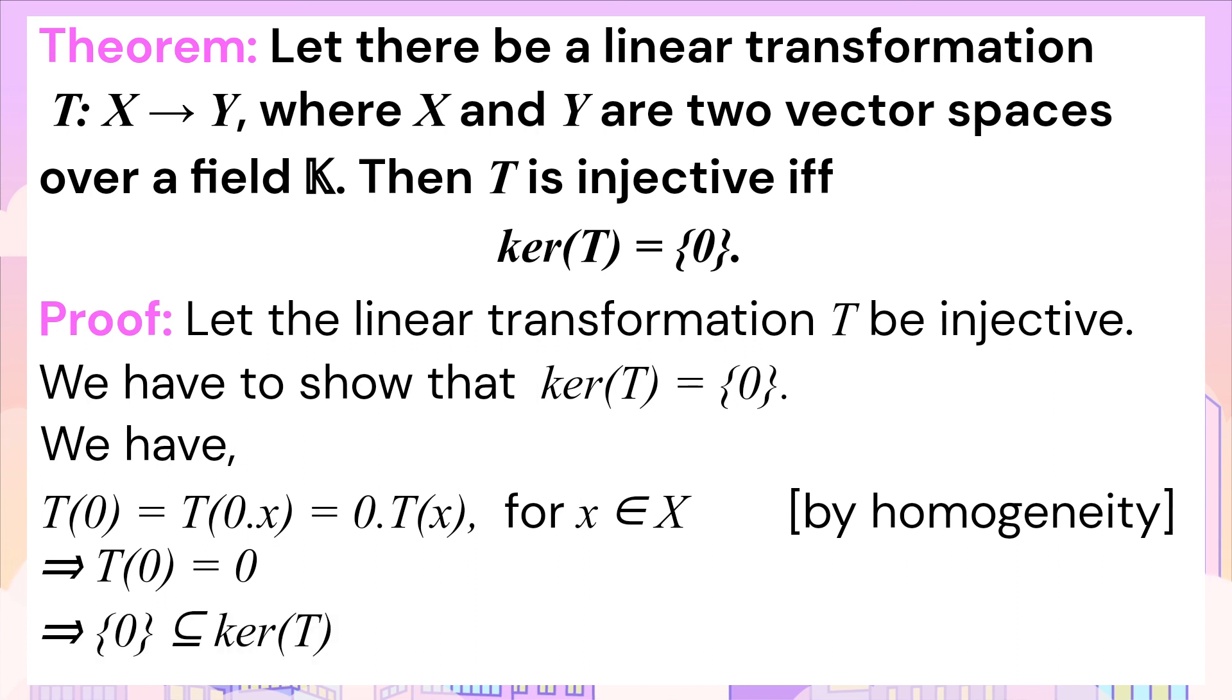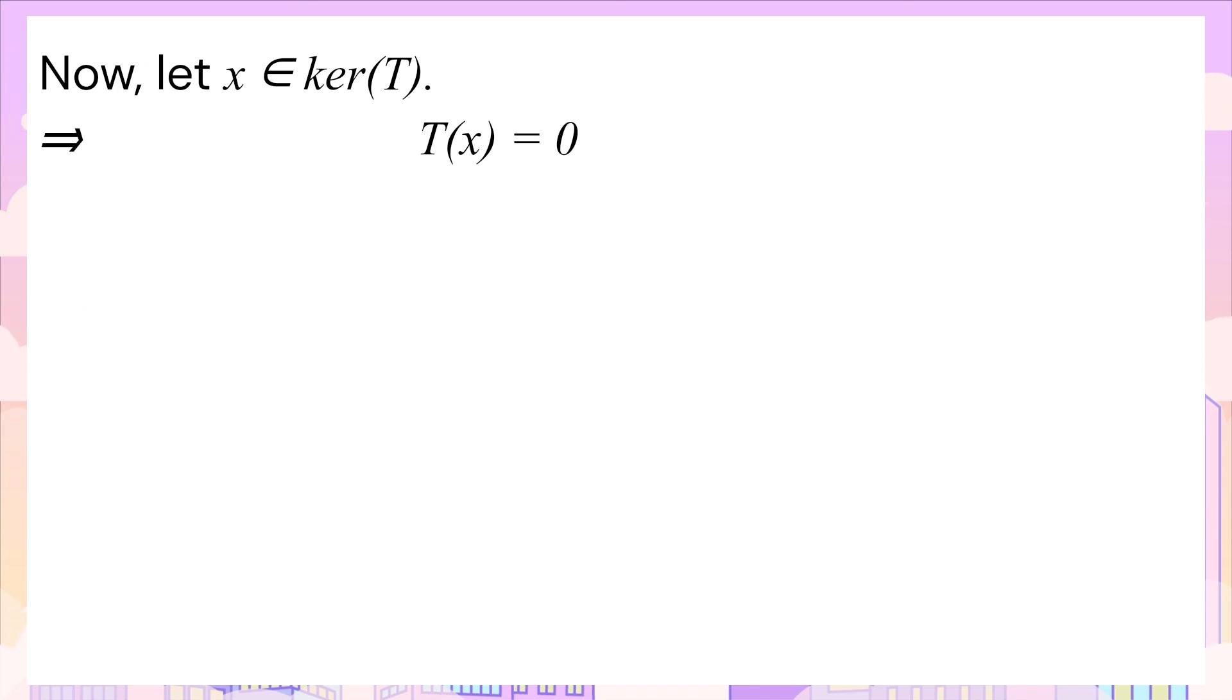Next we prove the other part of set inclusion. Consider a vector x in the null space of T. From the definition of null space, T(x) is equal to zero. And I previously stated the fact that a linear transformation sends the vector zero to zero, so here we can write zero equals T(0).